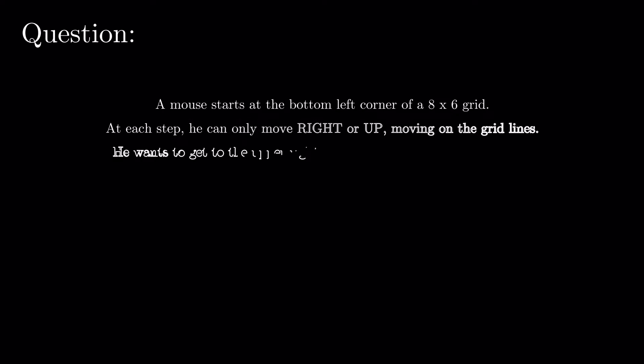A mouse starts at the bottom left corner of an 8 by 6 grid. At each step he can only move right or up, moving on the grid lines. He wants to get to the upper right corner where the cheese is located.